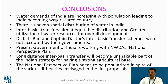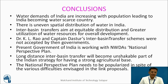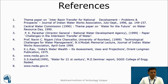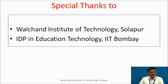Conclusions about interbasin transfer of water: Water demands of India are increasing with population, leading to India becoming a water-scarce country. There is uneven spatial distribution of water in India. Interbasin water transfers aim at equitable distribution and greater utilization of water resources for overall development. Dr. K.L. Rao's and Captain Dastur's interbasin transfer schemes were not accepted by the governments of their time. But the present Government of India is working with NWDA's National Perspective Plan. Long-distance interbasin transfers will become an unshakable part of the Indian strategy for a strong agriculture base, and hence the National Perspective Plan needs to be popularized in spite of various difficulties. Special thanks to Walchand Institute of Technology, Solapur, and IDP in Educational Technology, IIT Bombay. Thank you.